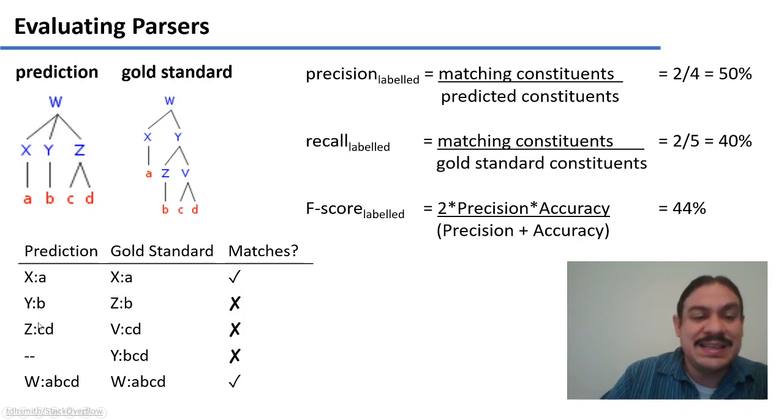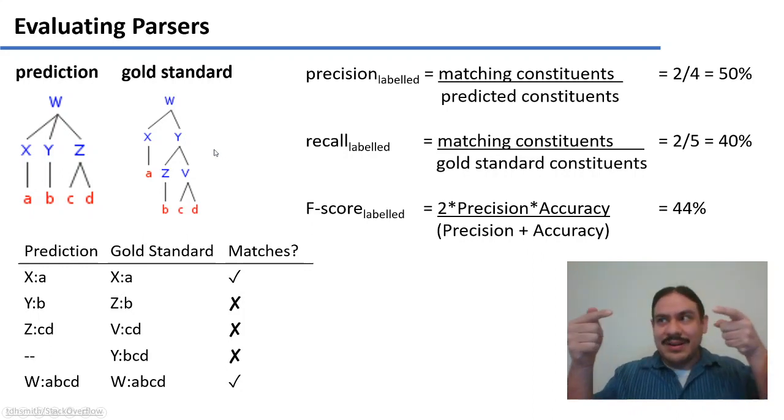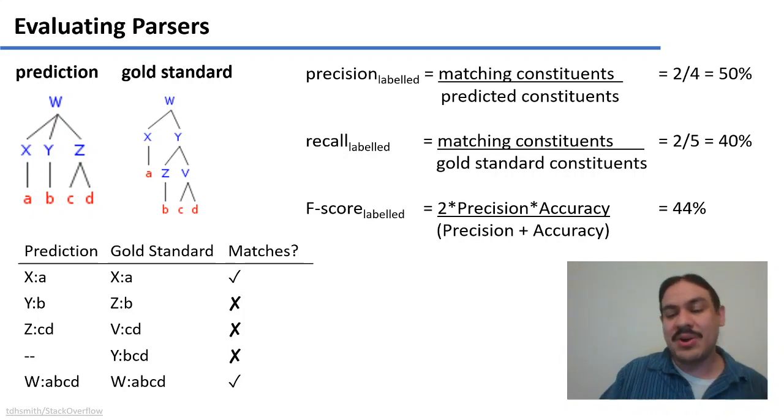So we can also use the F-score, which as we studied in week five, I think, this is the beta equals two, which means balance the precision and accuracy. Precision multiplied by accuracy multiplied by two divided by precision plus accuracy is 44%. So as you can see, the performance of whichever system produced this prediction is not very good, but that way we can measure the precision for a collection of trees, thousands of trees, and we can know the performance of our parser.